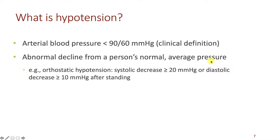For example, if your arterial pressure is 180 over 120, when you stand up your pressure will fall and then normally recovers. But a person who suffers from orthostatic hypotension — a low blood pressure that results from changes in body posture — when they suddenly stand up, if their systolic pressure decreases by 20 or more millimeters of mercury or their diastolic pressure decreases by 10 or more millimeters of mercury, that is considered orthostatic hypotension.